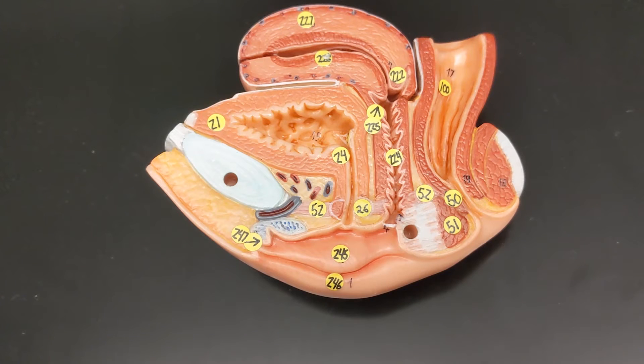So the cervix extends down into the vagina and around the cervix there's a little bit of space. What do we call the space? So the space is the fornix. And the functional purpose of that space is actually to give semen a place to pool.